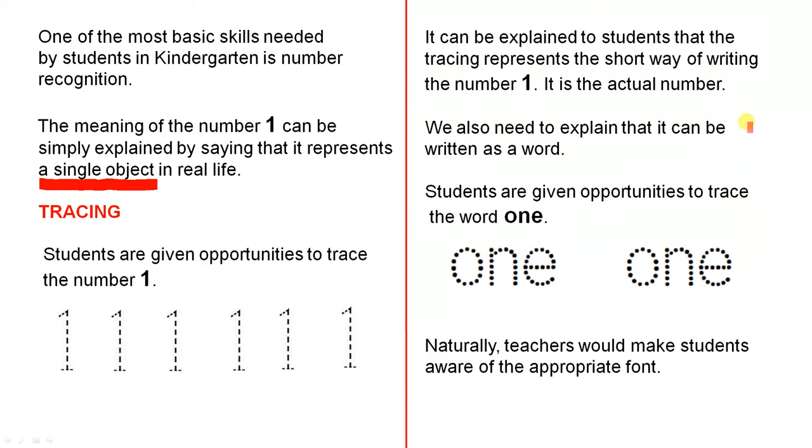It can be explained to students that the tracing represents the short way of writing the number one. It is the actual number. So that is the actual number and the short way of writing it.